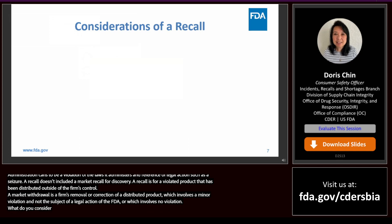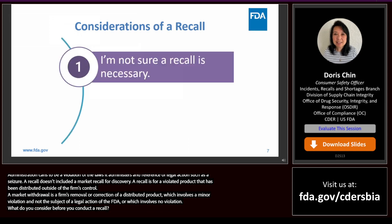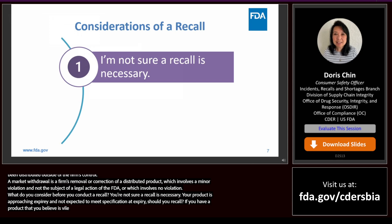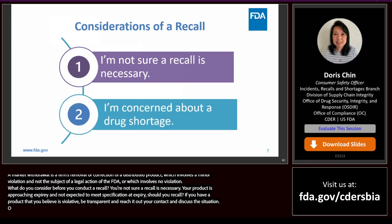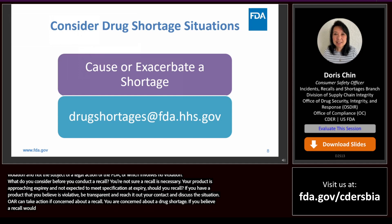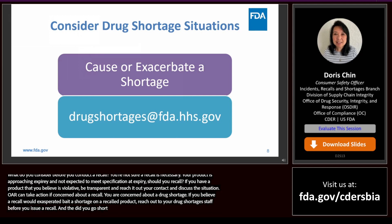What do you consider before you conduct a recall? If you have a product you believe is violative, be transparent — reach out to your ORA Farm point of contact and discuss the situation; they can provide guidance on whether your market action fits the definition of a recall. If you believe a market action would cause or exacerbate a shortage of a medically necessary product, reach out with your proposal to CDER's drug shortage staff before initiating a recall. The drug shortage staff will review your proposal and determine if a viable option exists to keep an otherwise violative product on the market because its benefit outweighs the risks.